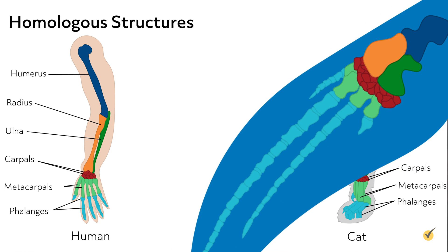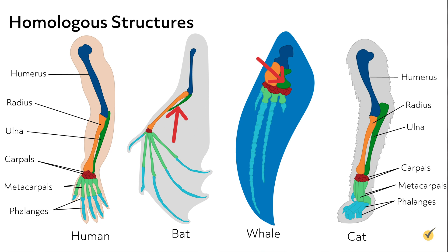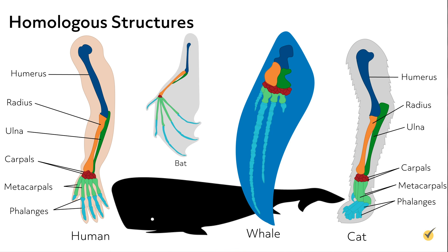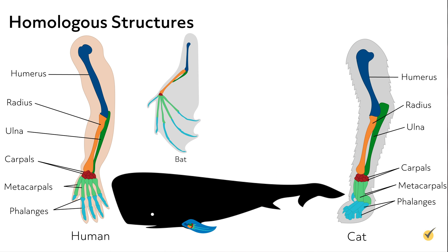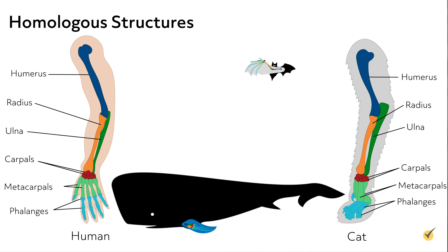A whale flipper and a bat wing are also homologous structures in the same sense as a human arm and a cat arm — with a humerus, radius and ulna and so on. But the whale's arm is actually a flipper that it uses to swim, while the bat uses its wing to fly.